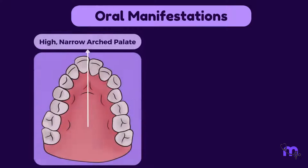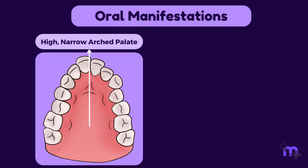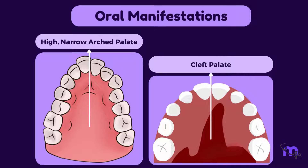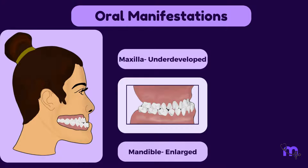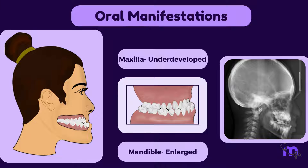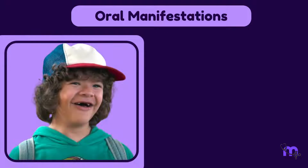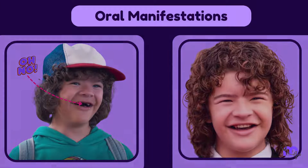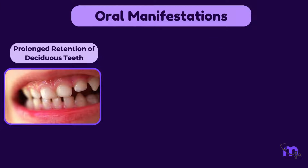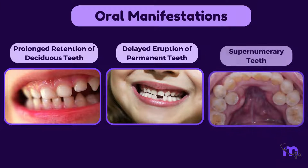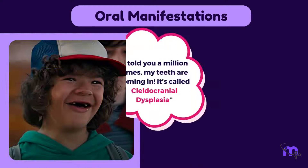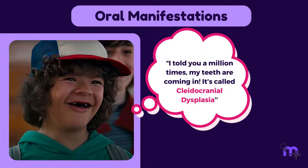Oral manifestations include a high narrow arched palate and a predisposition to cleft palate. The maxilla may appear underdeveloped, while enlarged mandibles are observed in the majority of affected patients. One of the recurring themes in Stranger Things is Dustin's teeth, or the lack of them. Prolonged retention of deciduous teeth, delayed eruption of permanent teeth, and the presence of supernumerary teeth are common. As the character says: 'I told you a million times, my teeth are coming in. It's called cleidocranial dysplasia.'